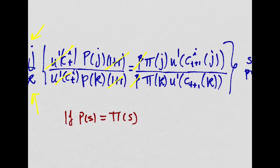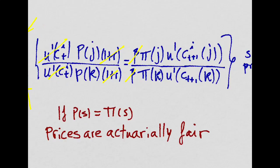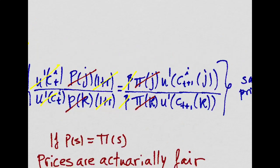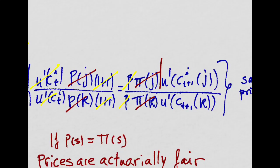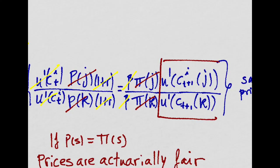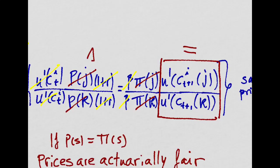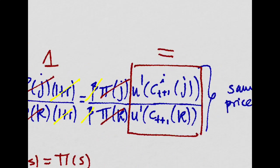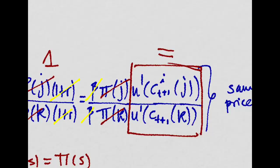If this holds, that is, if the prices of these Arrow-DeBrew securities are actuarially fair, then this and that are the same, and this and that are the same, so we can cancel them out. And we're left with the fact that, given this assumption, the ratio of the marginal utilities at T plus 1 across states S is equal to 1. Meaning, these two marginal utilities for two different states are the same, given that prices are actuarially fair.